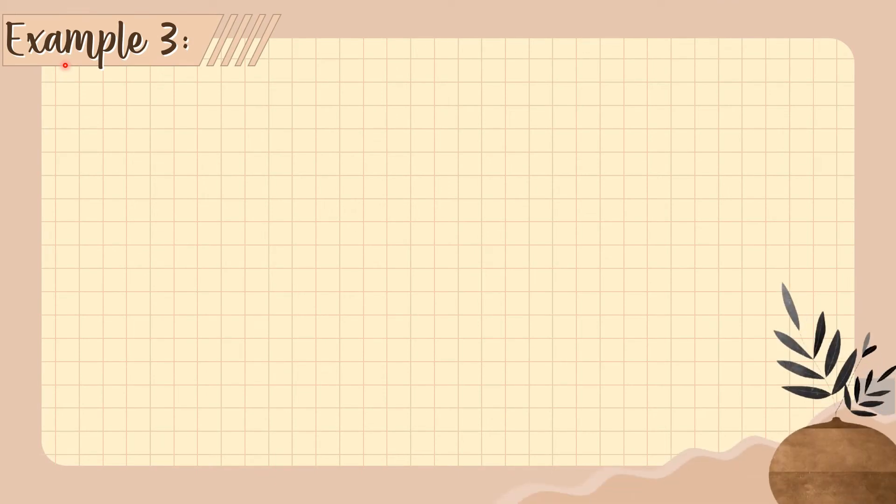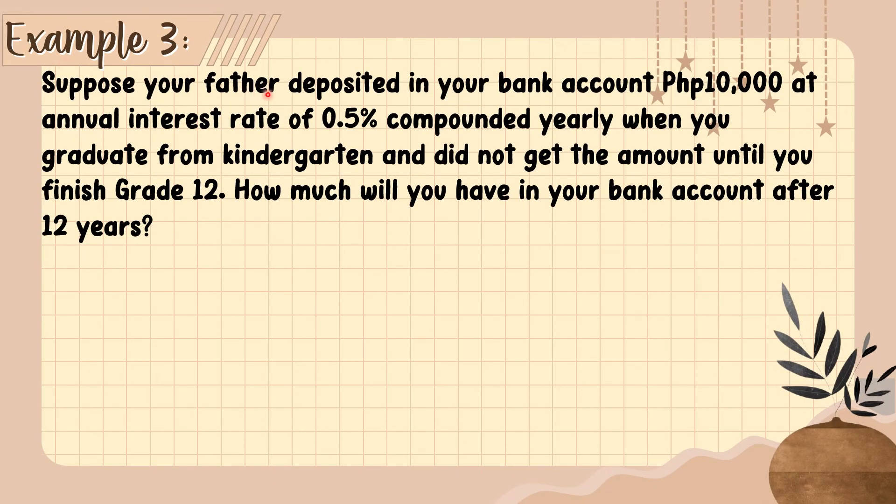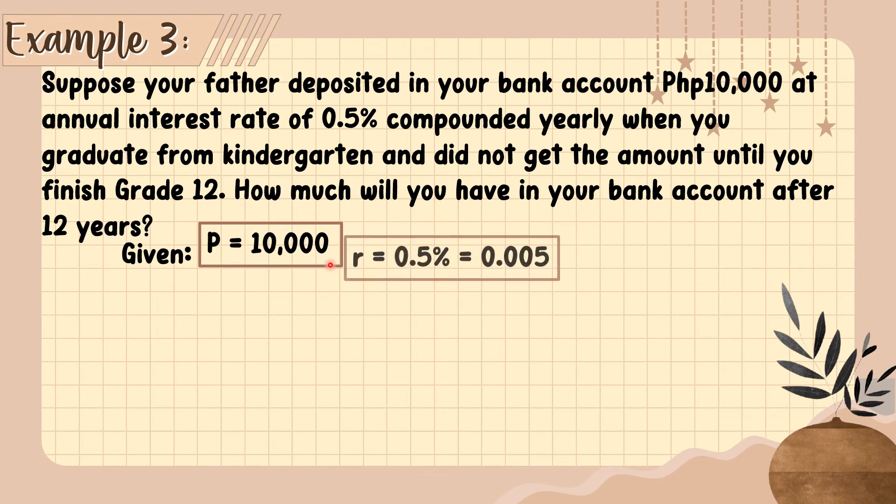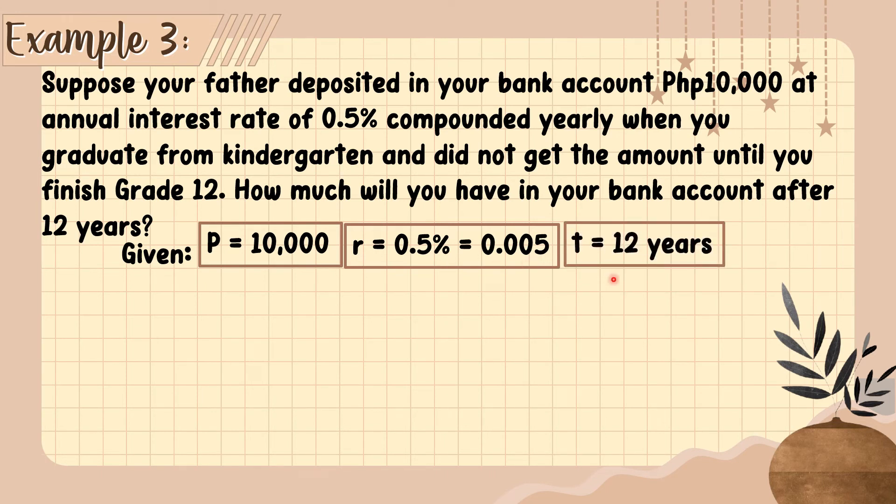Now let's have example number 3. Suppose your father deposited in your bank account 10,000 pesos at an annual interest rate of 0.5% compounded yearly when you graduated from kindergarten and did not get the amount until you finished grade 12. How much will you have in your bank account after 12 years? The given: principal is 10,000, rate is 0.5% or 0.005 in decimal form, and time is 12 years. Let's find the maturity value.